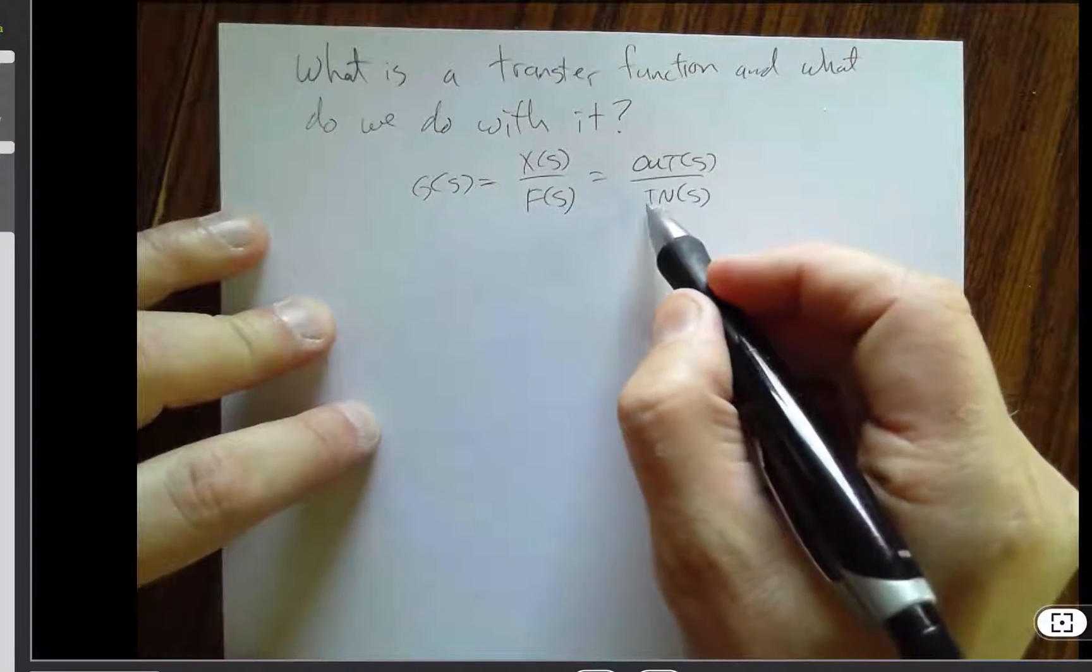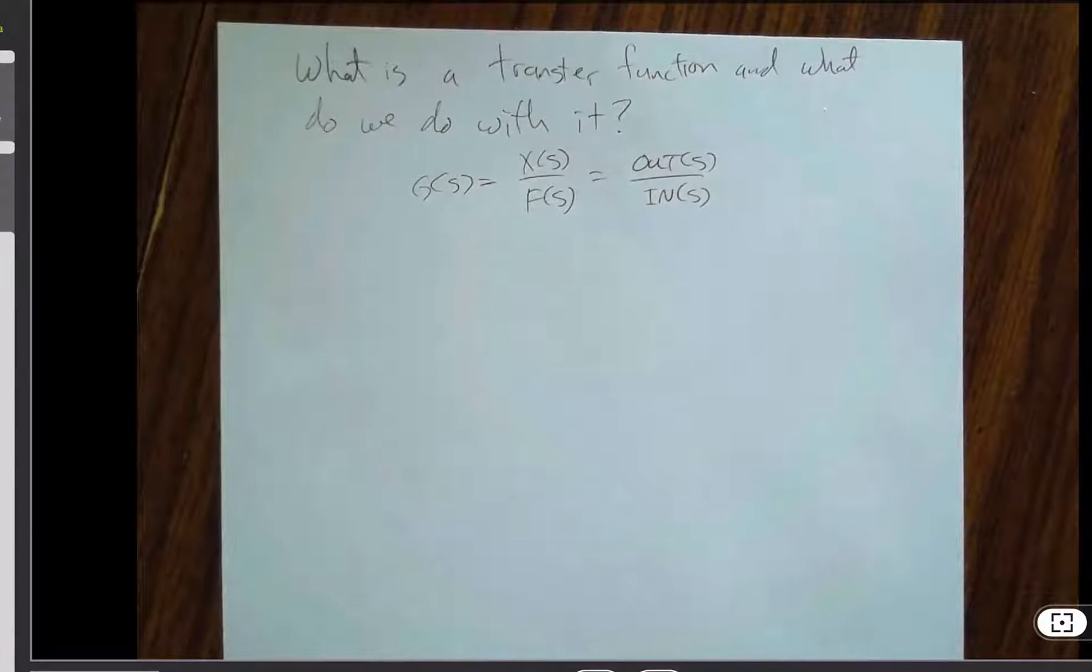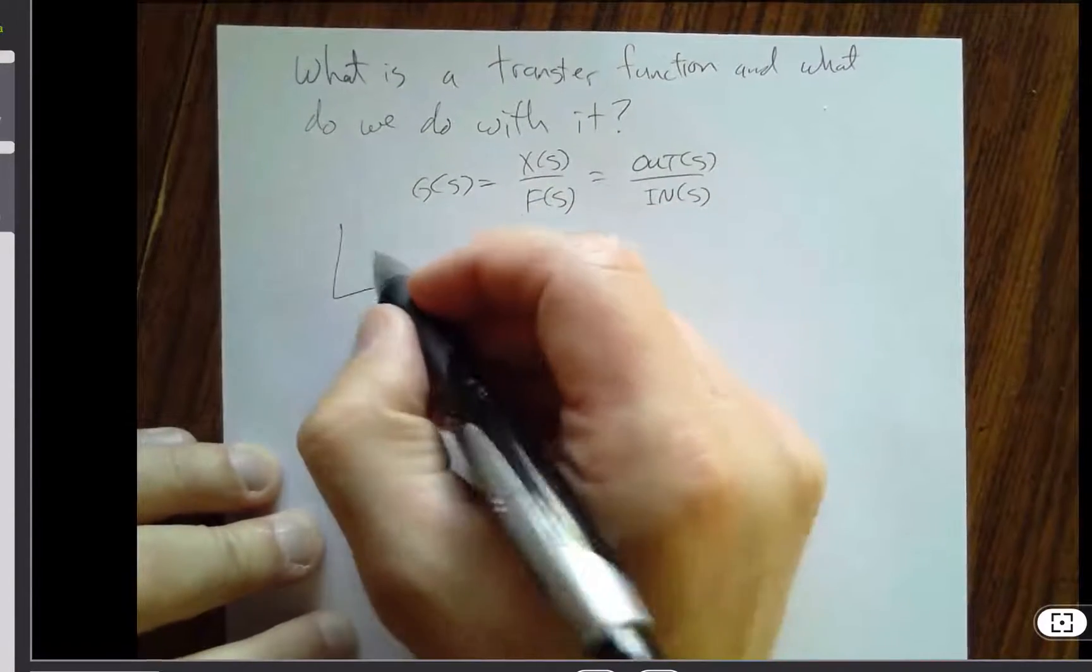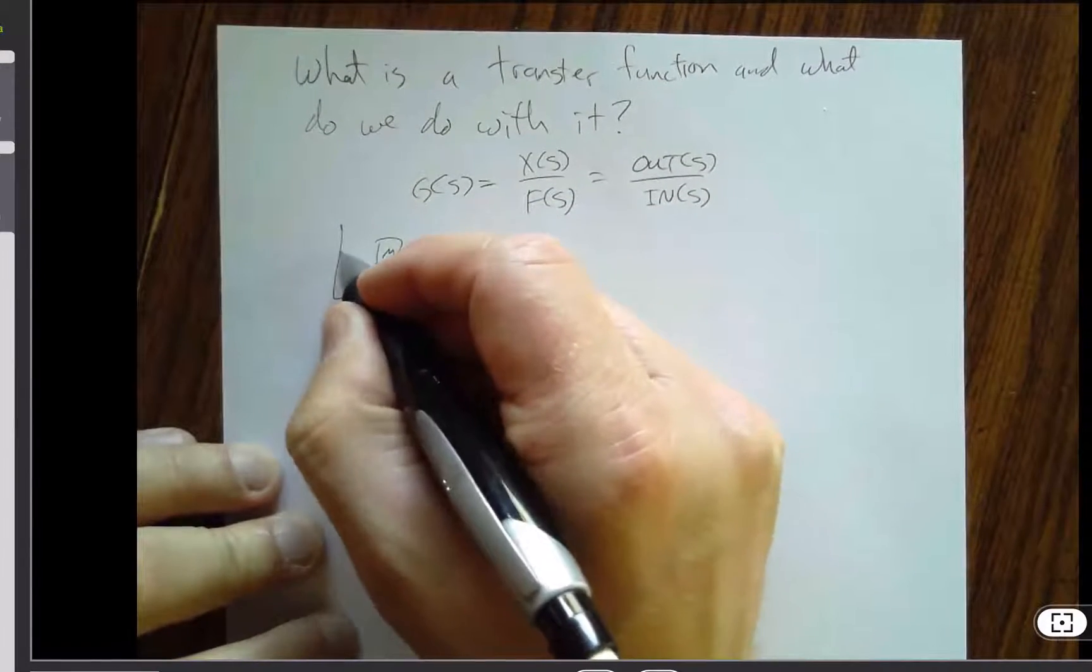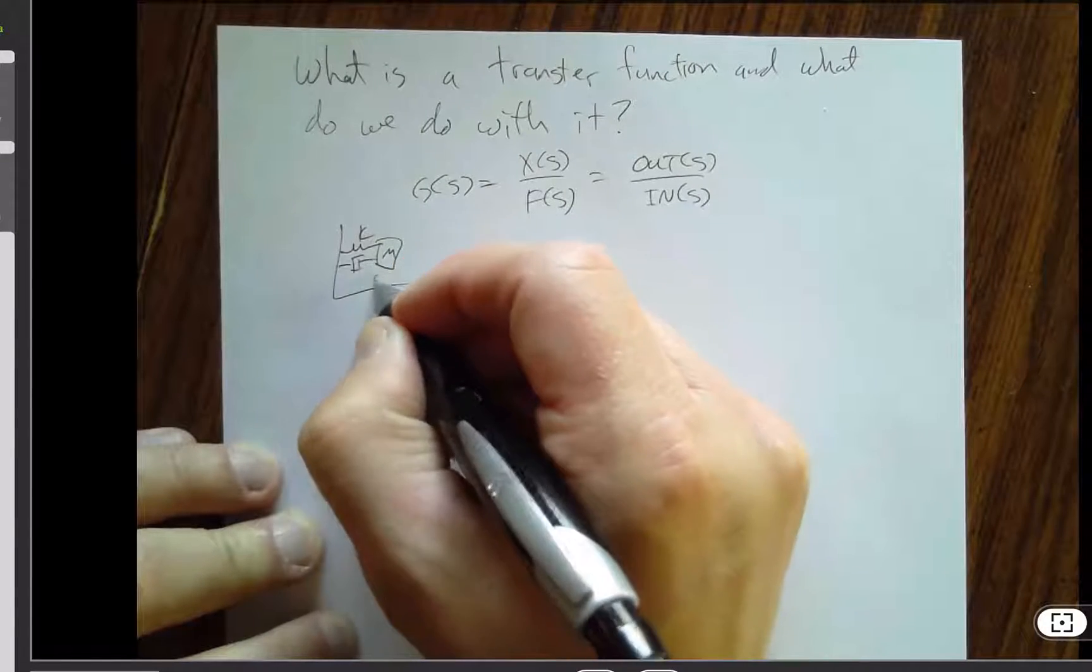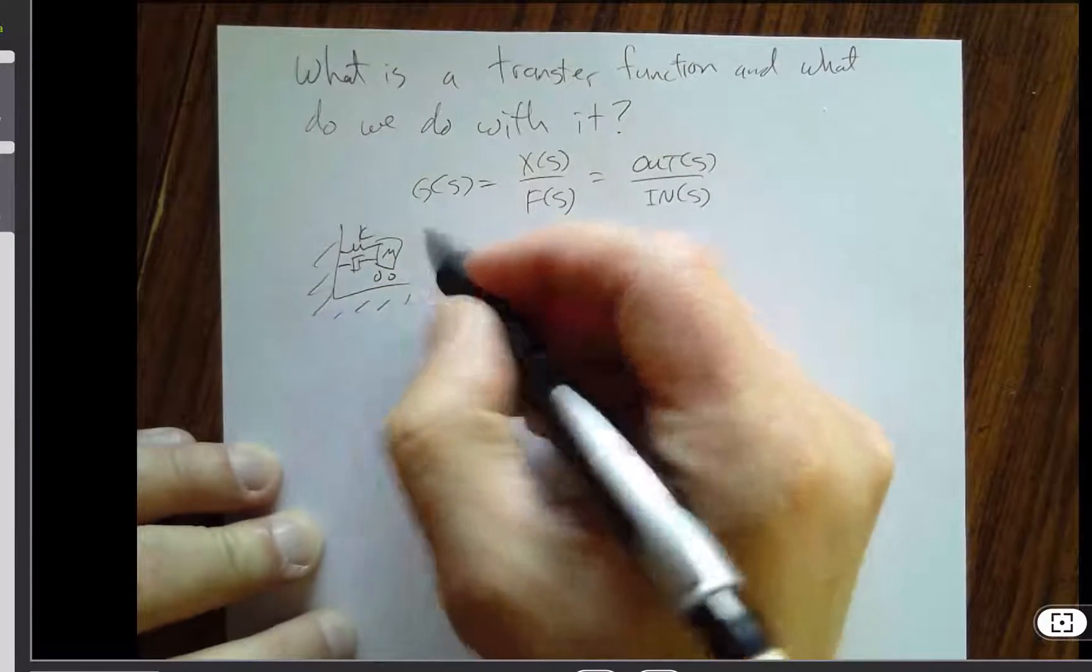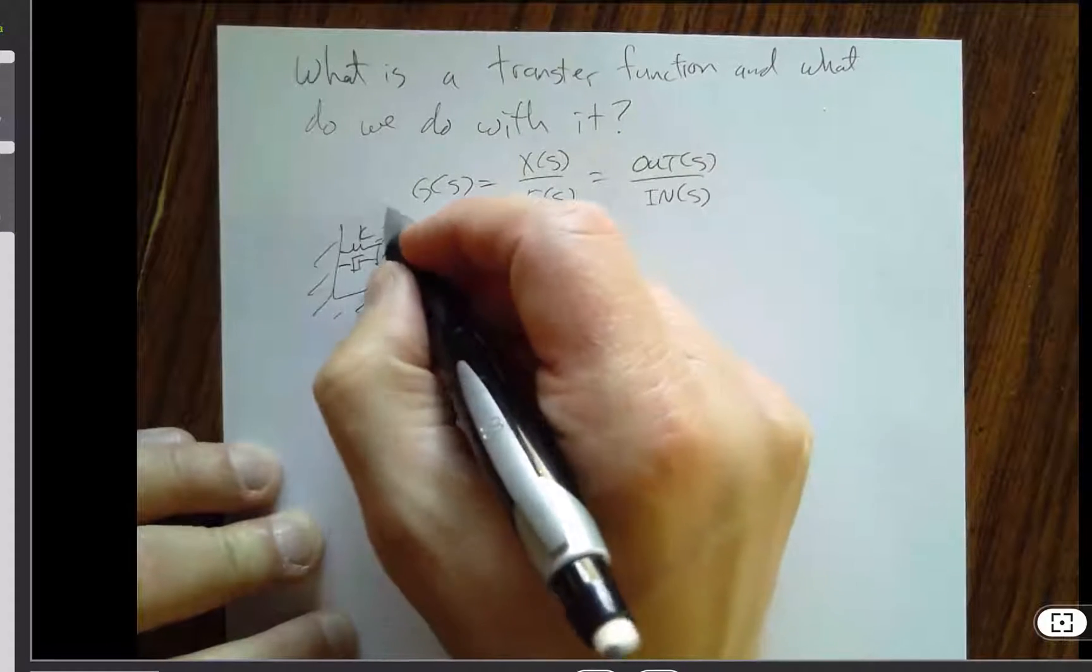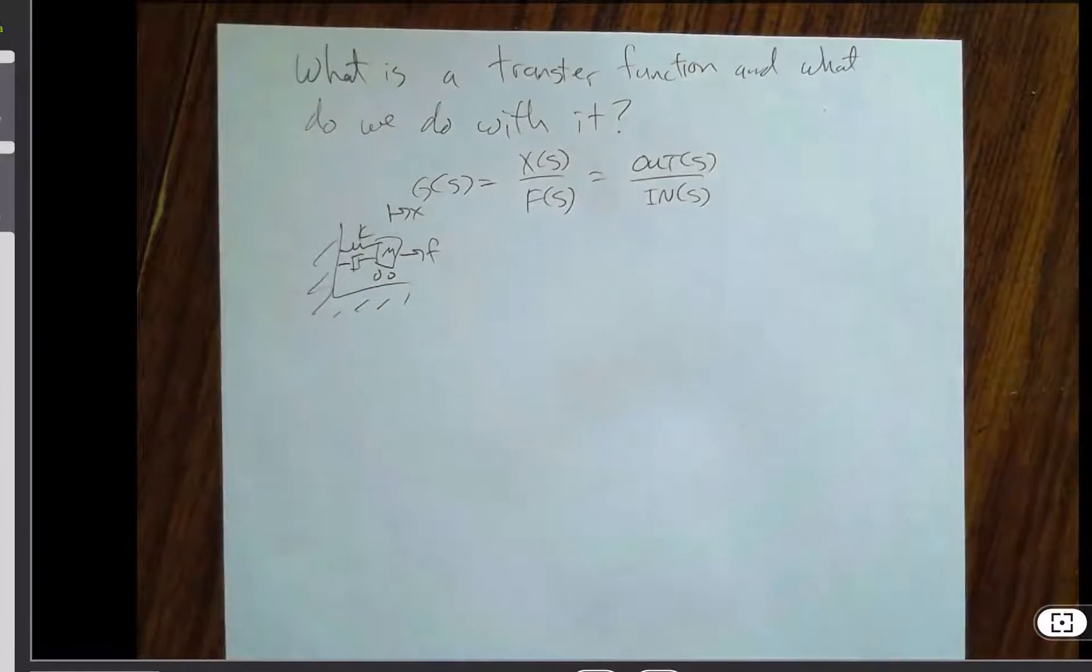The transfer function is a property of the system, so in the case of, for example, a mass spring damper system, it depends on m and k and b, and those things will not change. If this were an electrical system, it might depend on things like capacitance and inductance or resistance, but they're properties of the system that do not change.